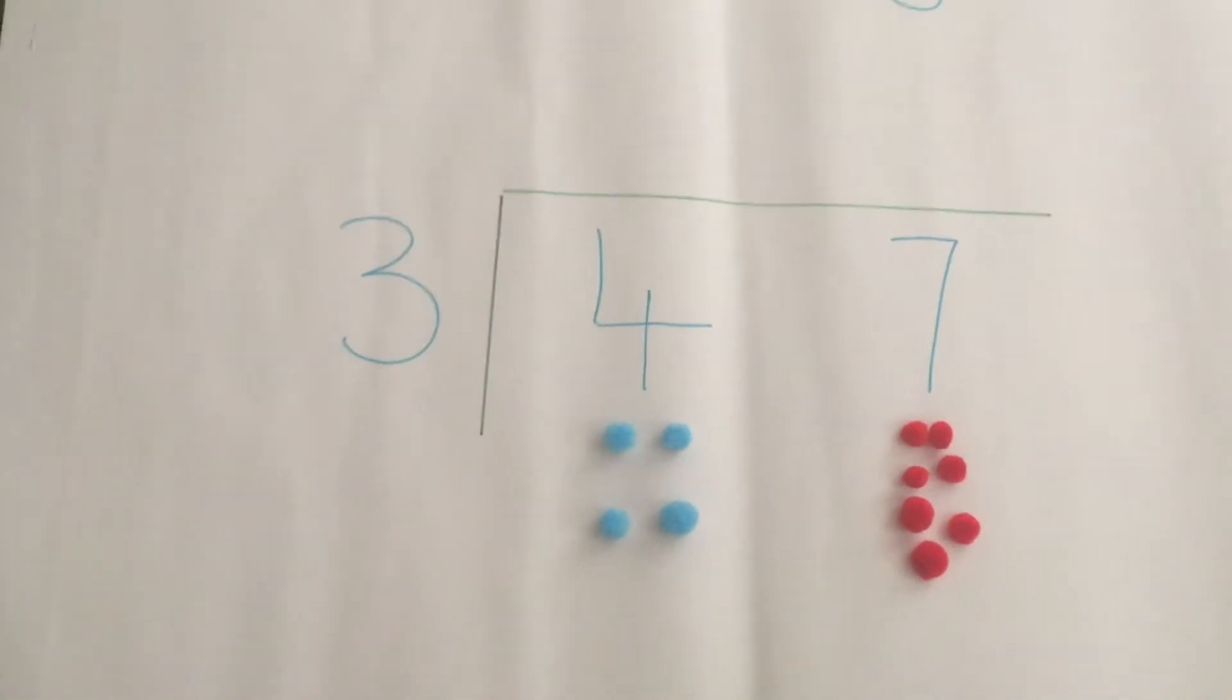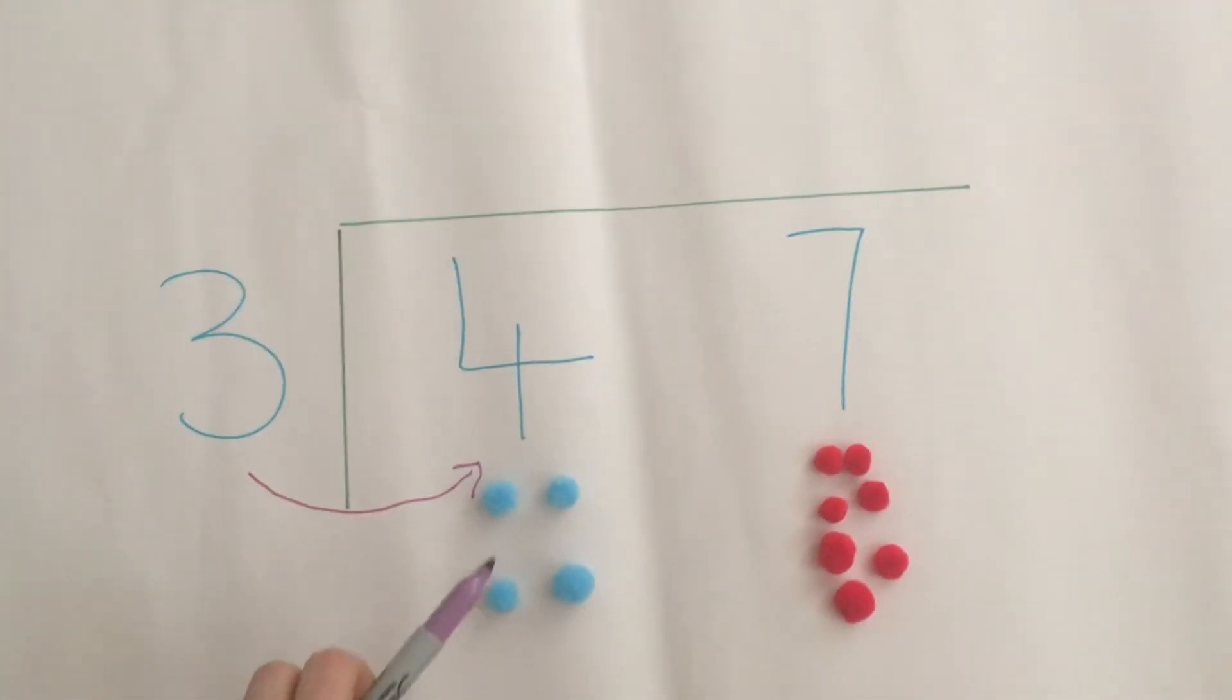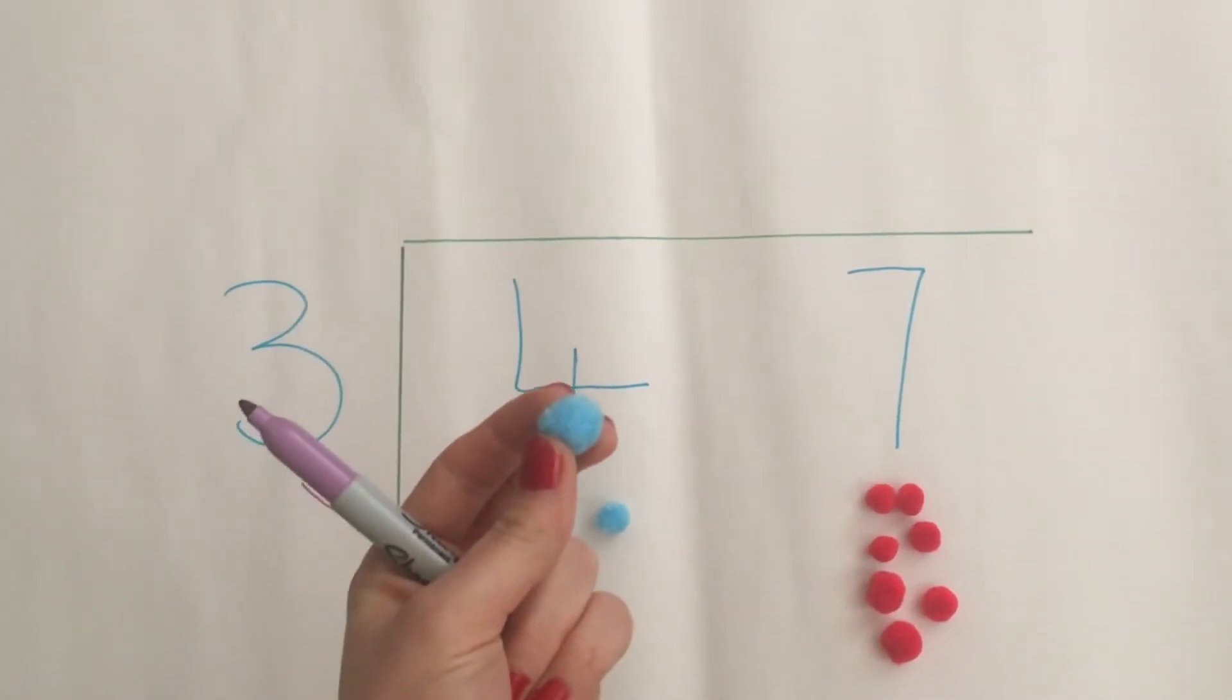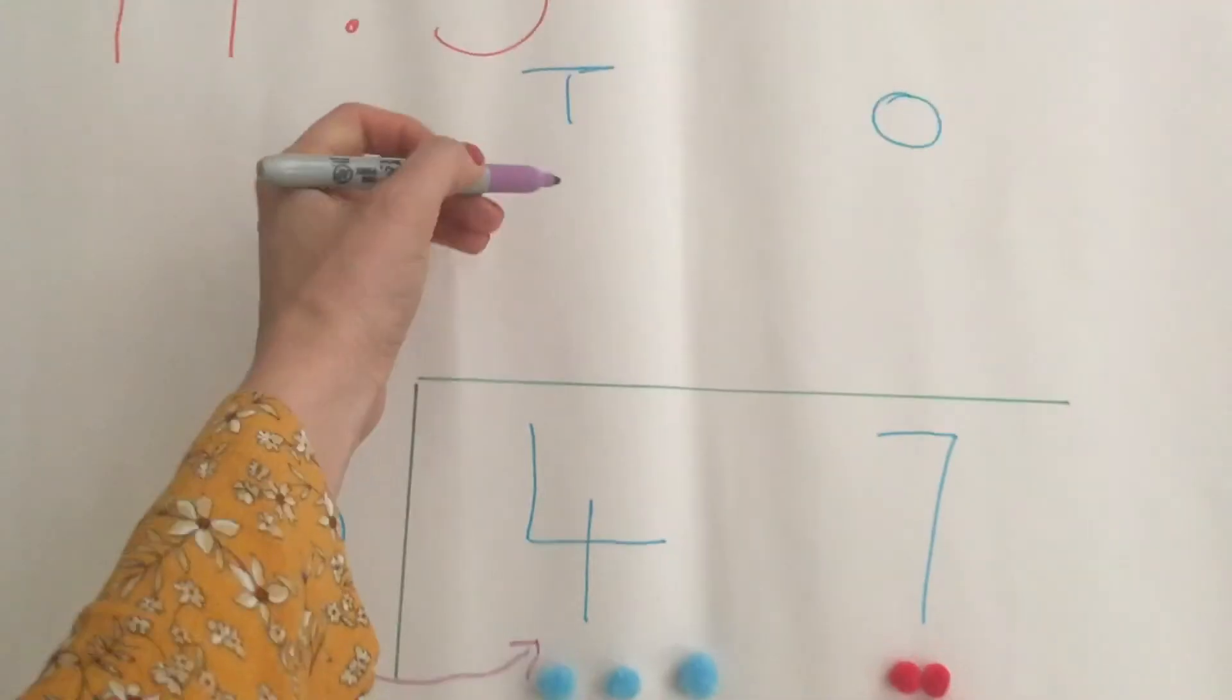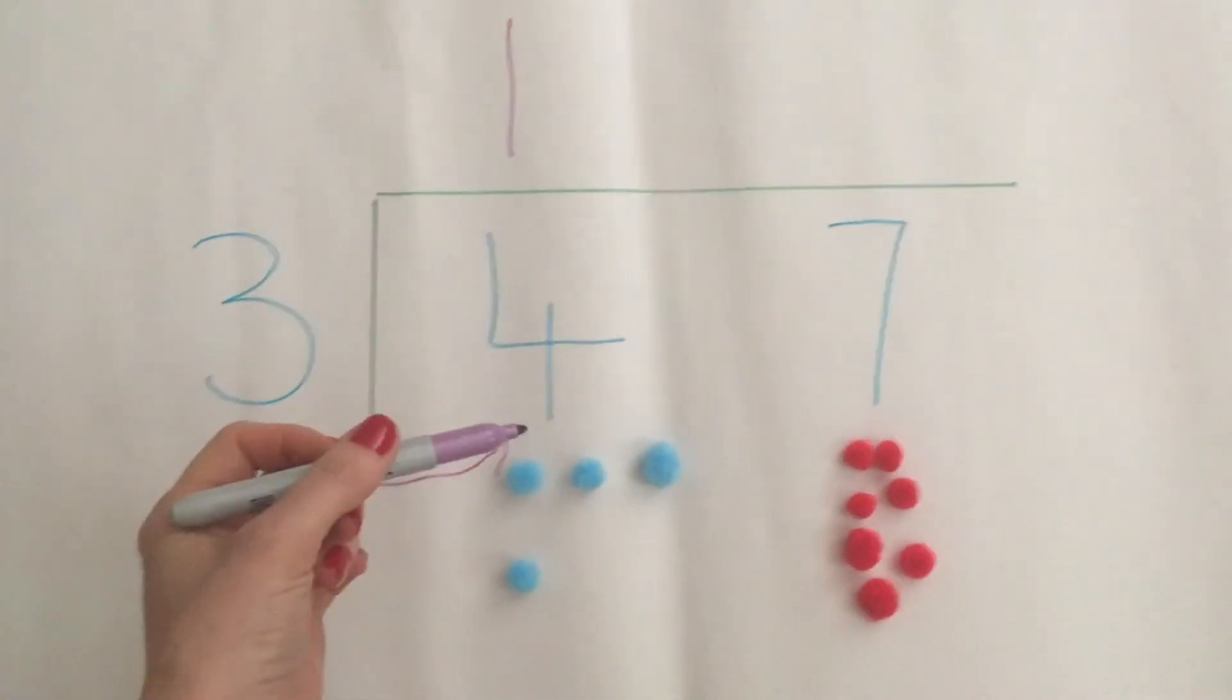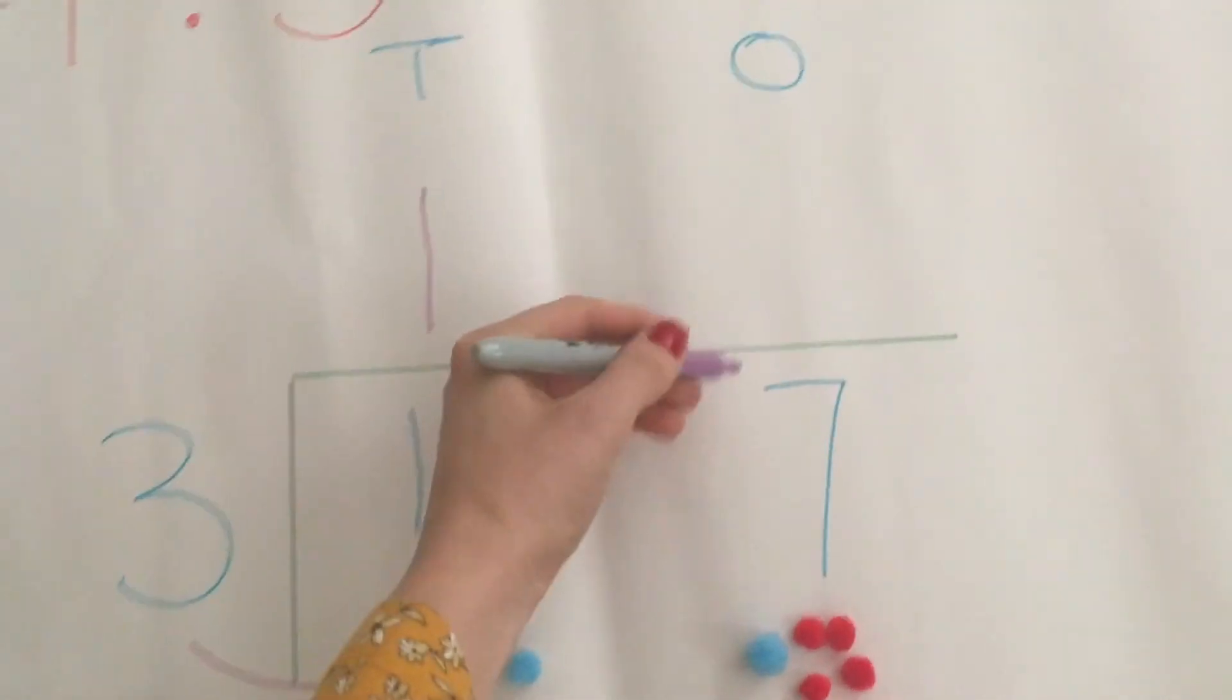The first step I'm going to do is look how many times the number 3 can go into 4. So 3 can go into 4 one time, but there's 1 left over. So I need to put that into my ones column. I need to write a 1 above my 4 because 3 goes into the number 4 one time. Then it has 1 ten left over.